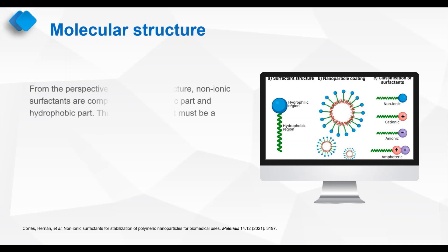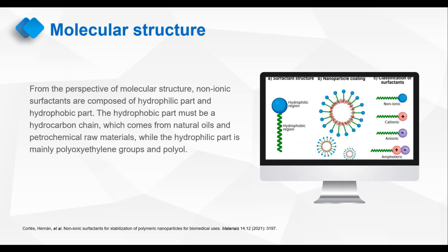From the perspective of molecular structure, nonionic surfactants are composed of hydrophilic part and hydrophobic part. The hydrophobic part must be a hydrocarbon chain, which comes from natural oils and petrochemical raw materials, while the hydrophilic part is mainly polyoxyethylene groups and polyol.